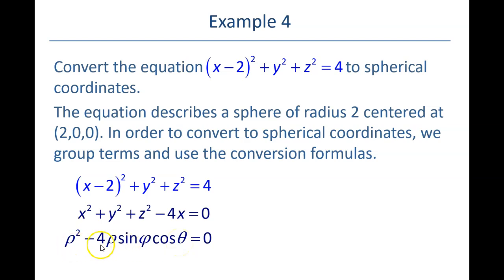Okay, now both of these have a ρ in them, so if I factor out a ρ, I'll have ρ times (ρ - 4 sin φ cos θ), and there'll be two solutions to that. I could have ρ = 0, which we'll throw that away, or I could have ρ = 4 sin φ cos θ. And that is now what this equation looks like in polar form.